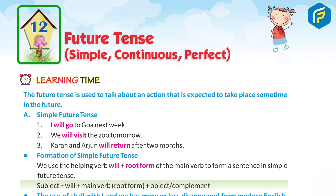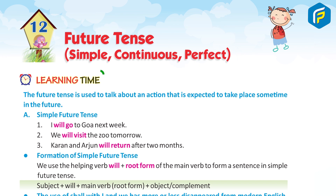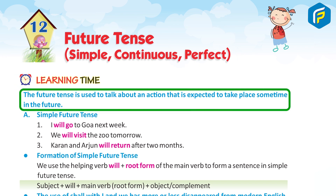Chapter 12: Future Tense — Simple, Continuous, Perfect. The Future Tense is used to talk about an action that is expected to take place in the future.